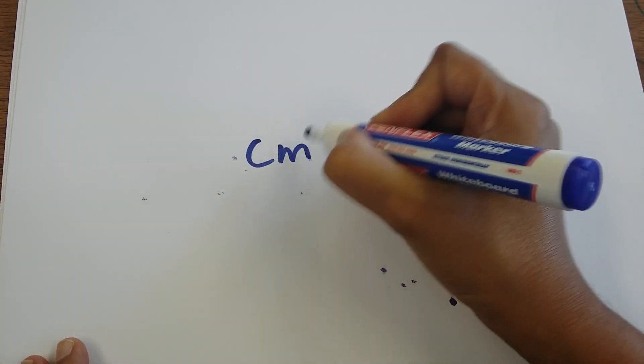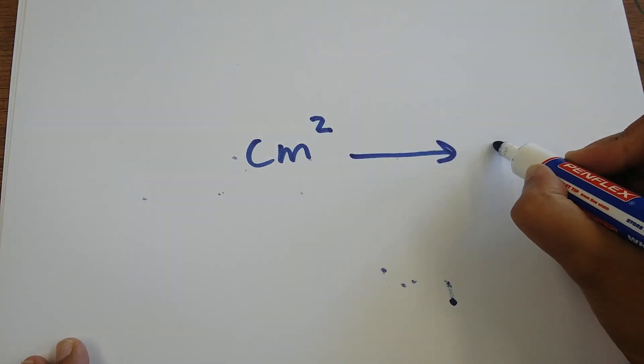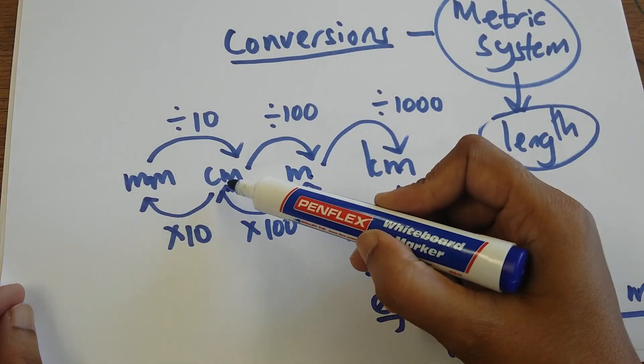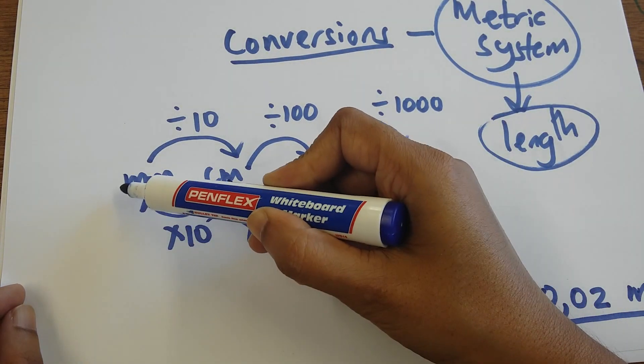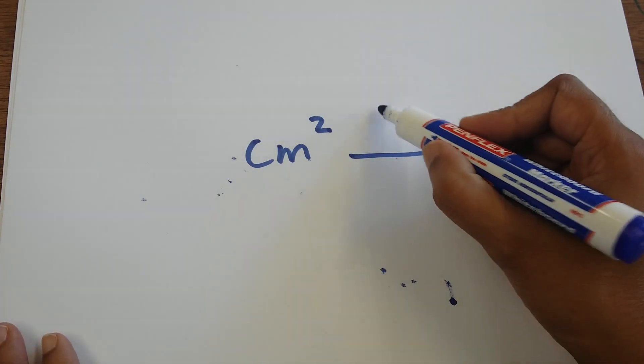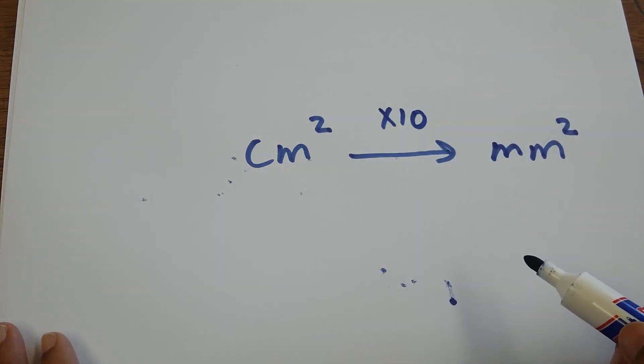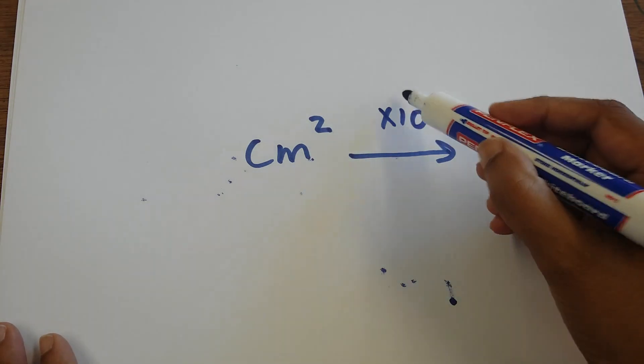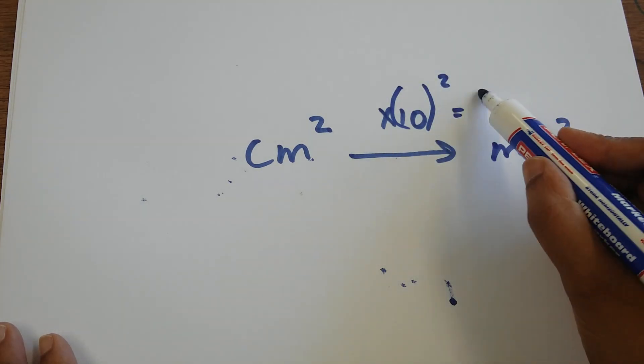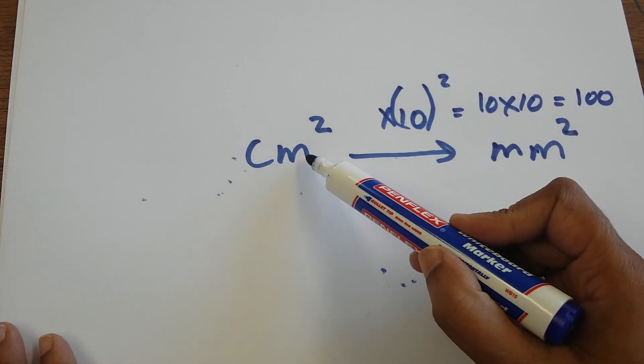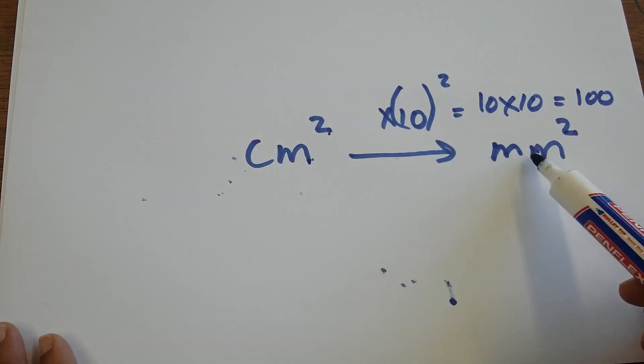The same is going to apply if I go from centimeter square to millimeter square. Once again, I go to my conversion. I'm going from centimeter to millimeter, so my rule is multiply by 10. However, my centimeter is square, my millimeter is square, so I also square the 10, which is 10 times 10, that gives us 100. So when we convert from centimeter square to millimeter square, we multiply by 100.